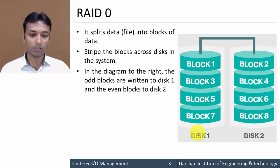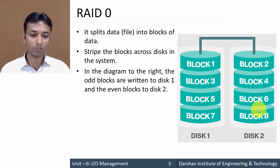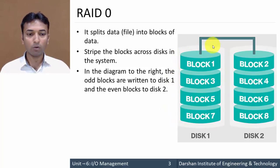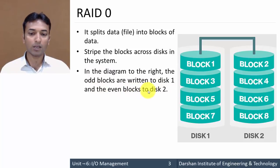Block 1 is placed in disk 1, block 2 is placed in disk 2, block 3 is placed in disk 1, and block 4 is placed in disk 2. So all the odd blocks are placed in disk 1 and all the even blocks are placed in disk 2.